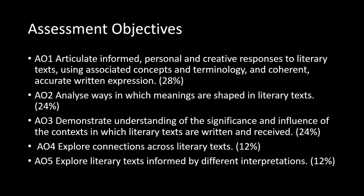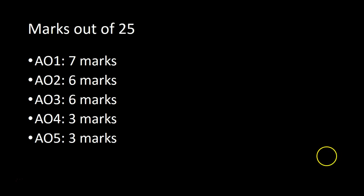AO4, which is the connection, is worth less — it's only three marks out of 25. And AO5 is also only worth three marks out of 25. That's where we talk about different interpretations. We always want to see the word 'alternatively' occurring in each and every one of your essays. Those are the marks — I've already talked through them, I don't need to go through them more.